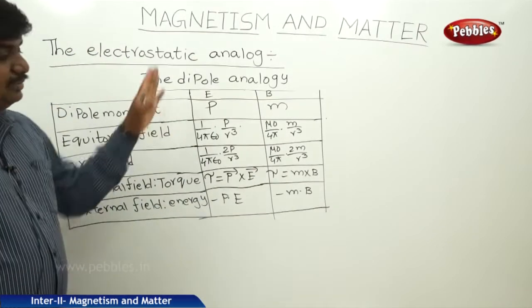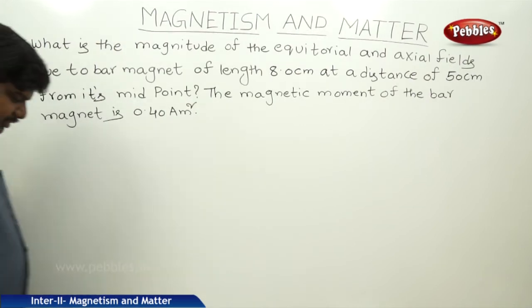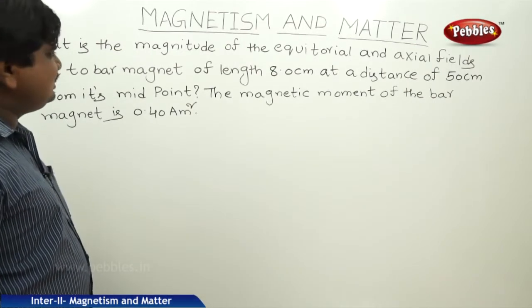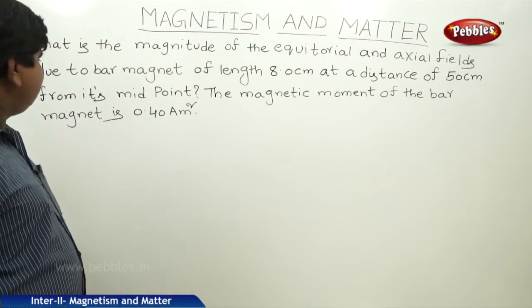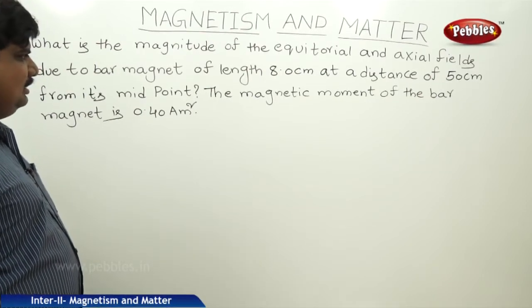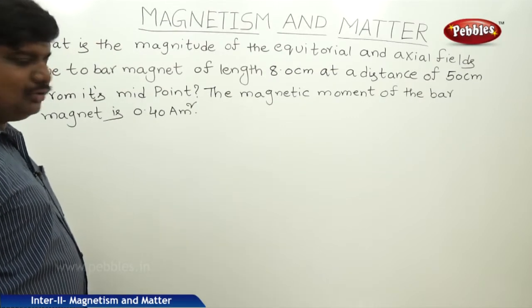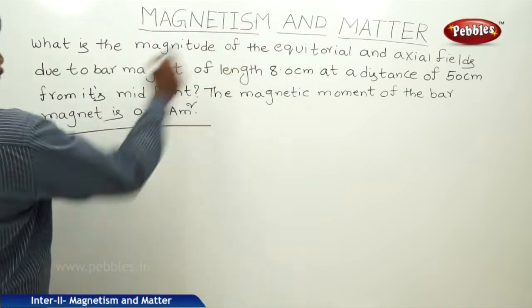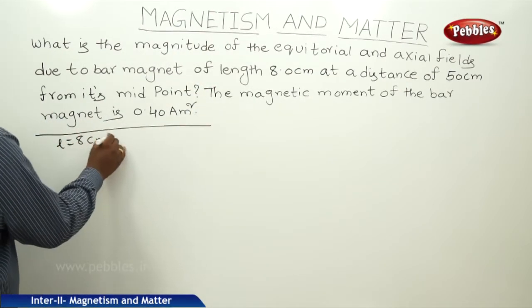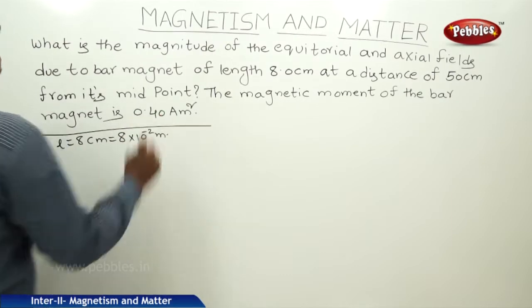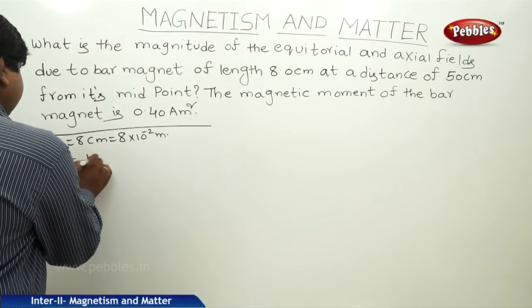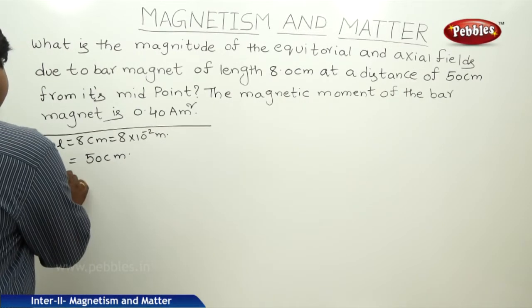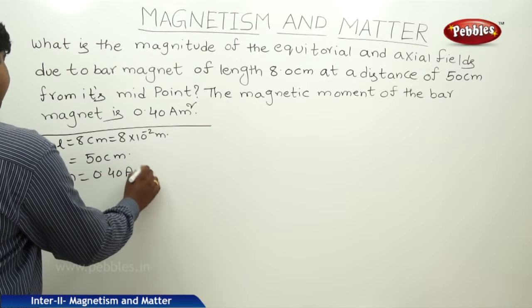Now we will discuss a numerical problem based on this concept of axial and equatorial fields. What is the magnitude of the equatorial and axial fields due to a bar magnet of length 8 centimeters at a distance of 50 centimeters from its midpoint? The magnetic moment of the bar magnet is 0.40 ampere meter square.